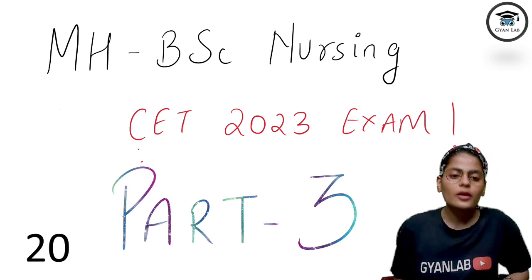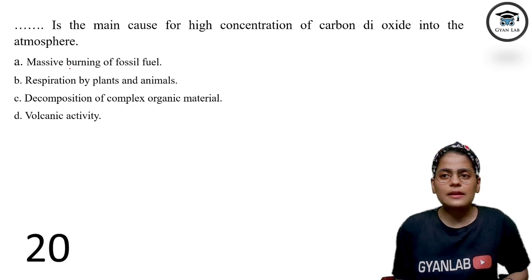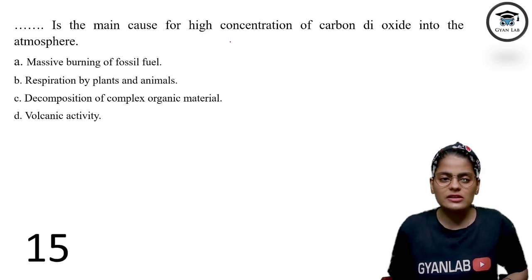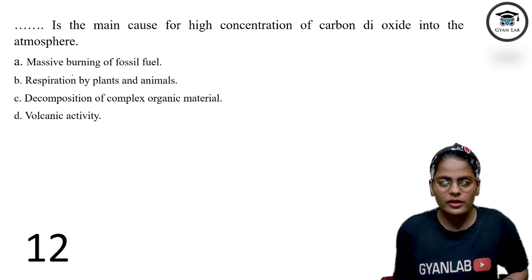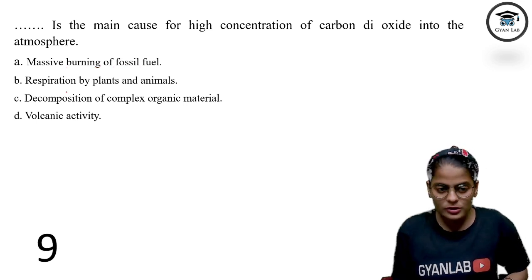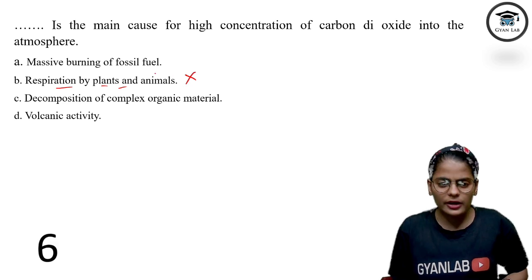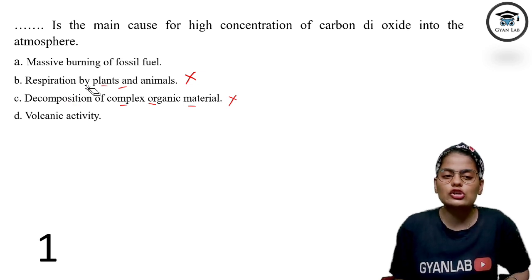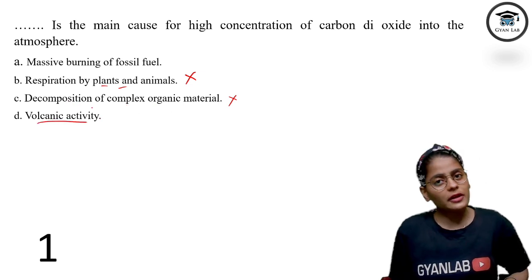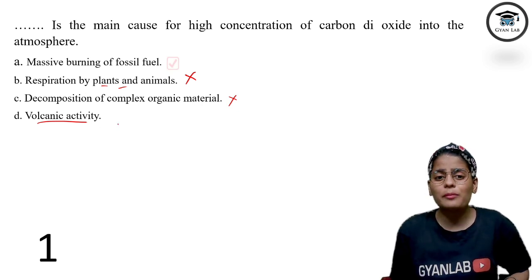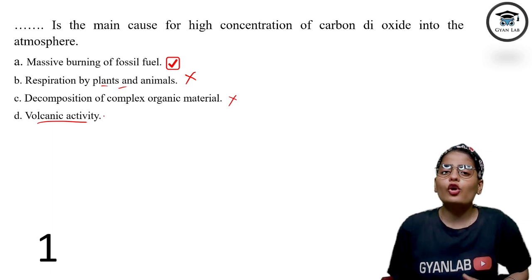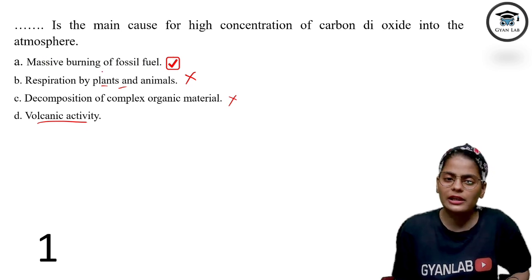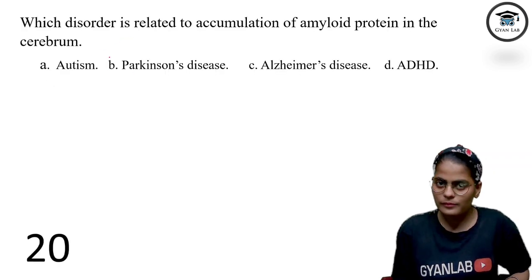This is the first MCQ: what is the main cause for the high concentration of carbon dioxide in the atmosphere? Massive burning of fossil fuels — this is correct. Respiration by plants and animals — this is incorrect. Decomposition of complex organic materials — this is also incorrect, though decomposition does increase CO2 levels. Volcanic activity also increases CO2, but the main cause is the burning of fossil fuels. We burn diesel and coal daily, causing massive CO2 production.